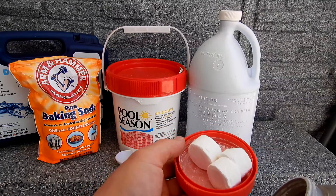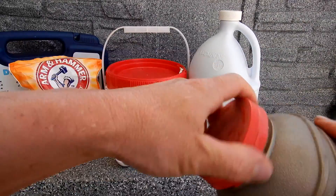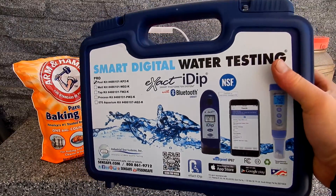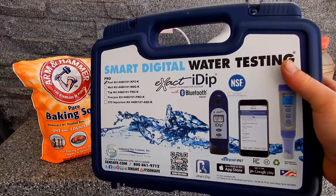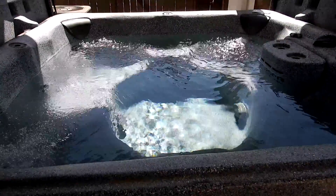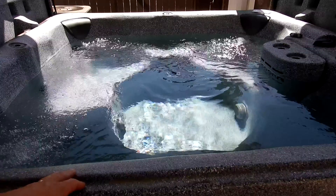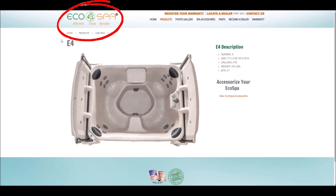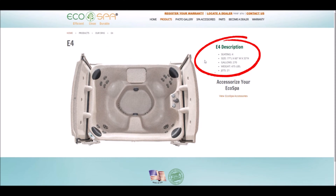Some spas also have a built-in tablet holder inside the skimmer. You're also going to need some way to test the water — you can use test strips or a more advanced test kit. You're going to need some kind of measuring tool. The app I use gives dosage measurements in teaspoons; I like converting to tablespoons since three teaspoons equals one tablespoon. You'll also need to know how many gallons are in your spa — the easiest way is to find the manufacturer and model number on their website. This spa is an Eco Spa with 270 gallons.